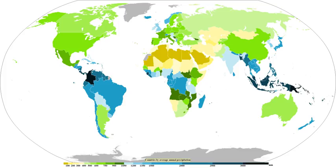In Hawaii, Mount Waialeale on the island of Kauai is notable for its extreme rainfall, as it has the second-highest average annual rainfall on Earth at 12,000 mm. Storm systems affect the state with heavy rains between October and March. Local climates vary on each island due to topography, divisible into windward and leeward regions. Windward sides receive much more rainfall; leeward sides are drier and sunnier. In South America, the Andes block Pacific moisture, resulting in a desert-like climate across western Argentina. The Sierra Nevada creates the same effect in North America, forming the Great Basin and Mojave Deserts.